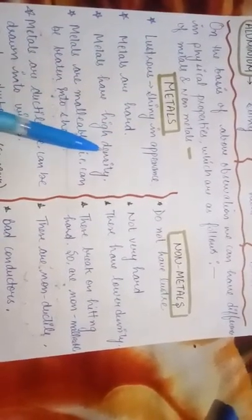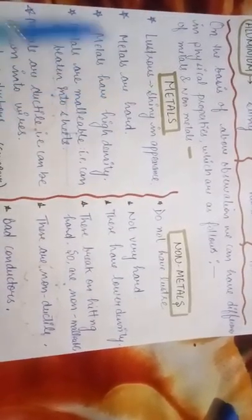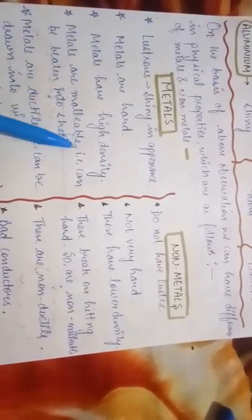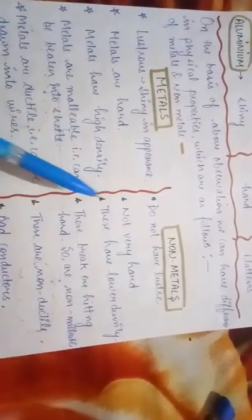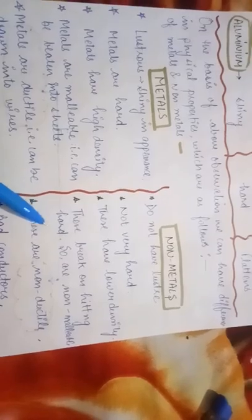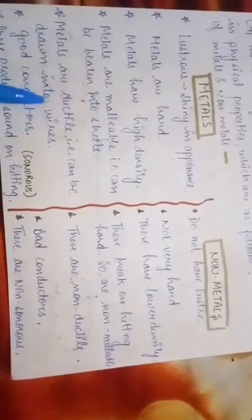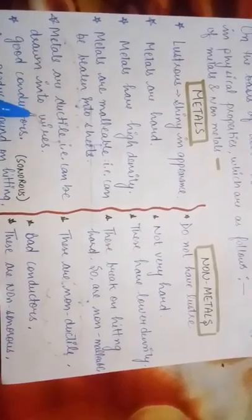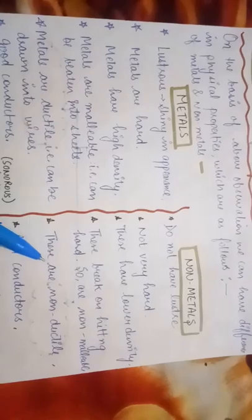Metals have high density. Nonmetals have lower density as compared to metals. Metals are malleable, that is can be beaten into sheets. However, nonmetals, these break on hitting hard so they are non-malleable. Metals are ductile, that is they can be drawn into wires, and nonmetals as already told you, they are non-ductile.